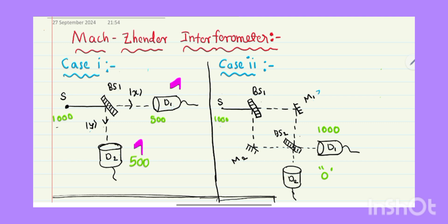In case 2, in addition to the single photon source and one beam splitter, I have two beam splitters. If I send 1000 photons through these two beam splitters, roughly all 1000 of them will reach D1 and none of them will reach D2. Why? We will discuss.